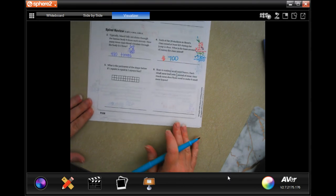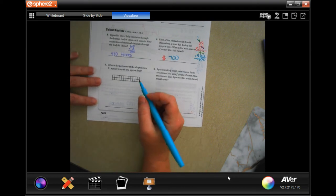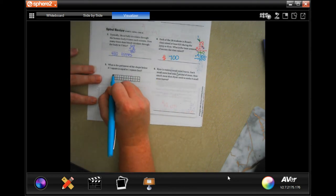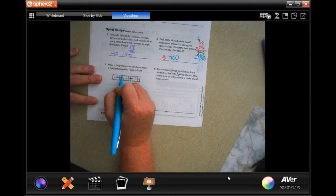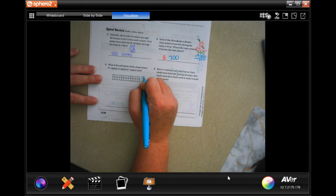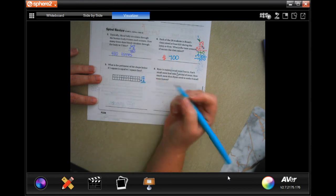All right. What is the perimeter of the square shape below? Okay. So, one square is equal to one square foot. Okay. So, we have one, two, three, four, five, six, seven, eight, nine, ten, eleven, twelve. And there are going to be two of those because we're doing perimeters.